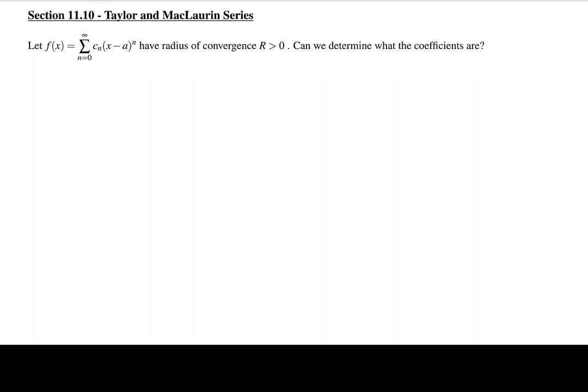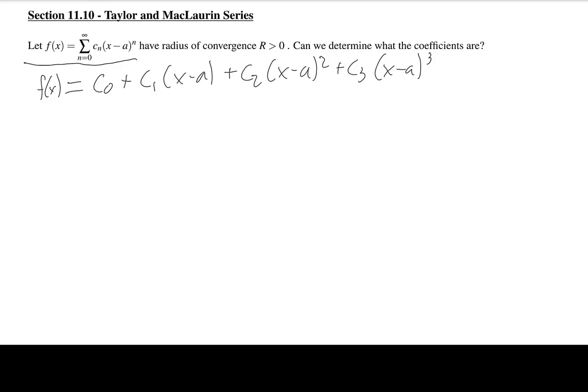If we have some power series given by the function f(x), can I determine what the coefficients are? Can I say what is c₁, c₂, c₀, all of these? If we write this out, f(x) is going to be equal to c₀ plus c₁ times (x minus a), plus c₂ times (x minus a) squared, plus c₃(x minus a) cubed, plus c₄(x minus a) to the fourth, and so on. Here, a is where we're centering this power series.